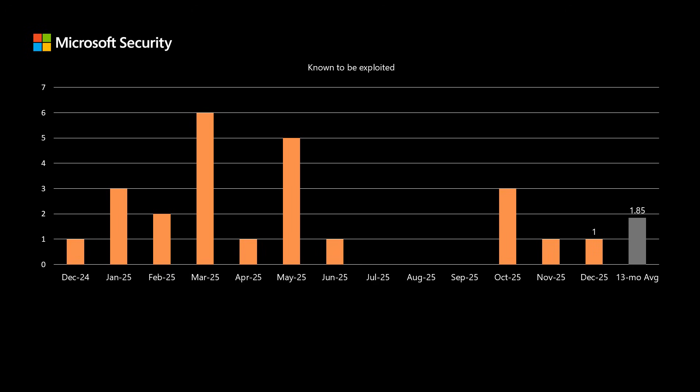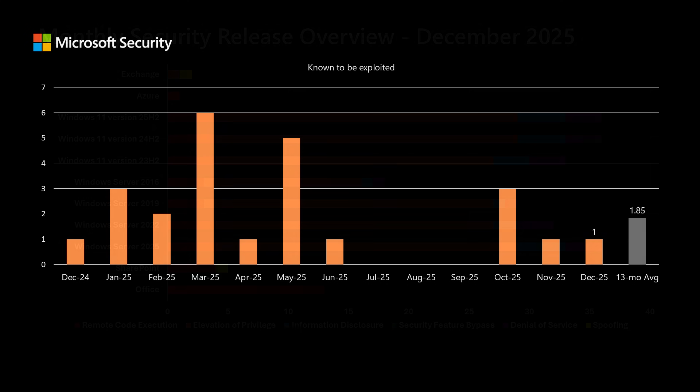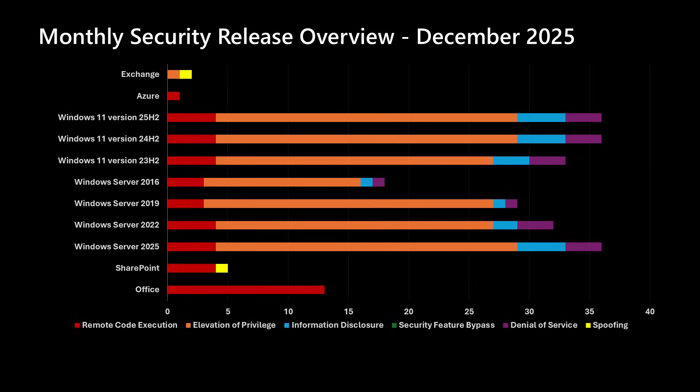I would designate exploited-in-the-wild vulnerabilities as real risks. These are not just theoretical risks where we don't know if exploit code has been created — these are ones where we know exploit code has been created and is out there in the wild, confirmed by Microsoft directly or through our partners. That's it for comparison of this release to the previous 12 months. We'll now dive into just this release, starting with our overview chart, which lists the major products that have updates to address vulnerabilities this month.